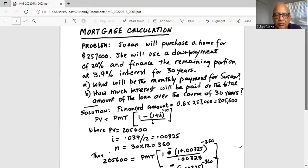So what did she finance? She financed only 80% of the purchase price, or 0.8 multiplied by $257,000, which is $205,600. And we are going to use this formula.